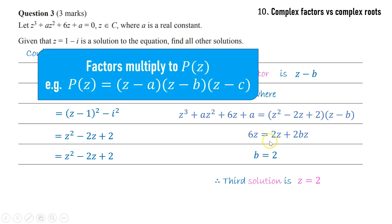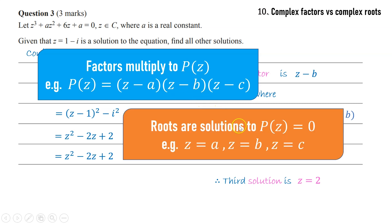Actually, z minus 2 is the factor, but the question is asking about the solution, so it should be z equals 2. Remember the factors are the expressions that multiply to give p of z, just like factors of a number multiply to give the number. Whereas the roots are the solutions to p of z equals 0. In this case z equals 2, z equals 1 minus i, those are the other roots or solutions.